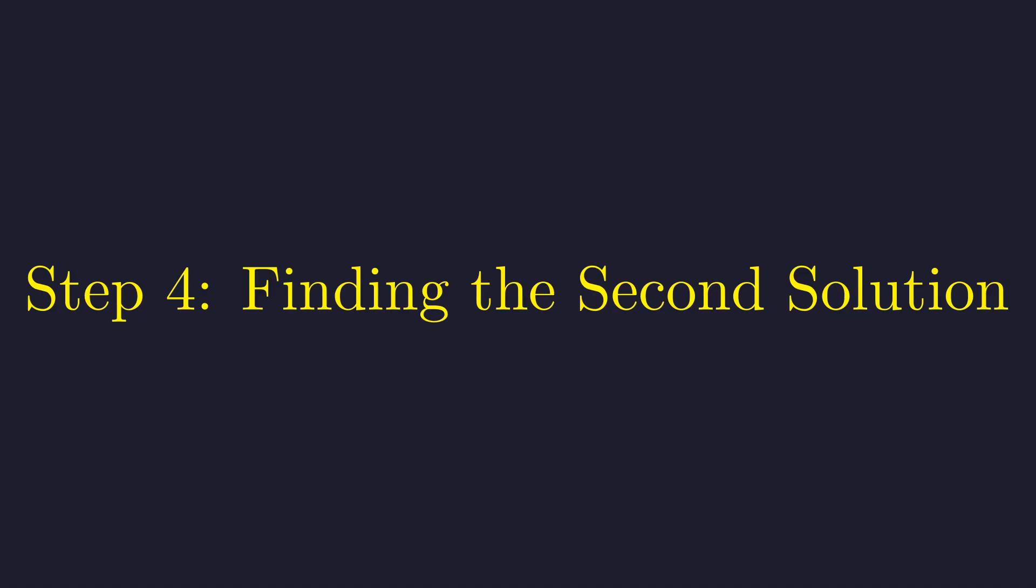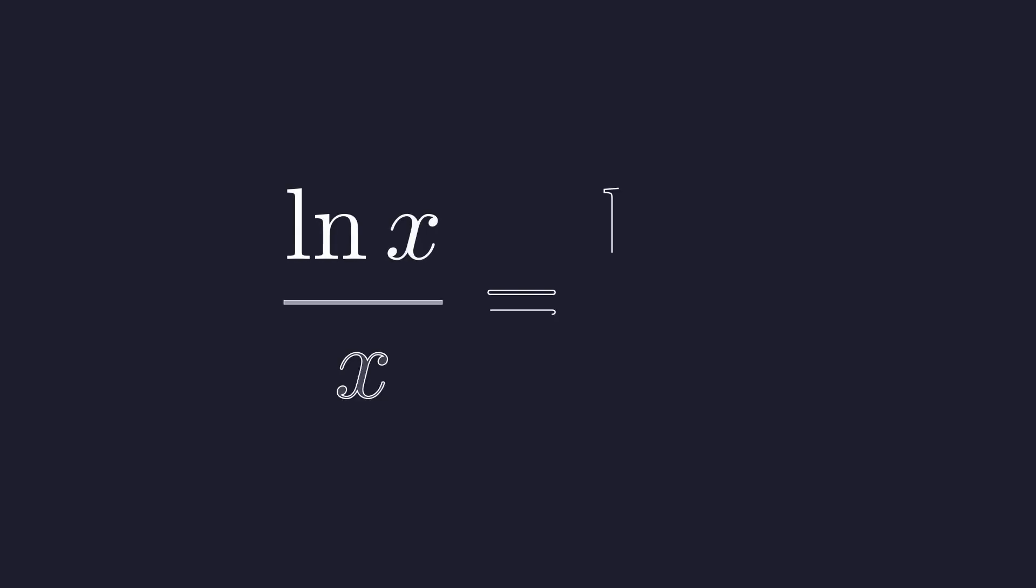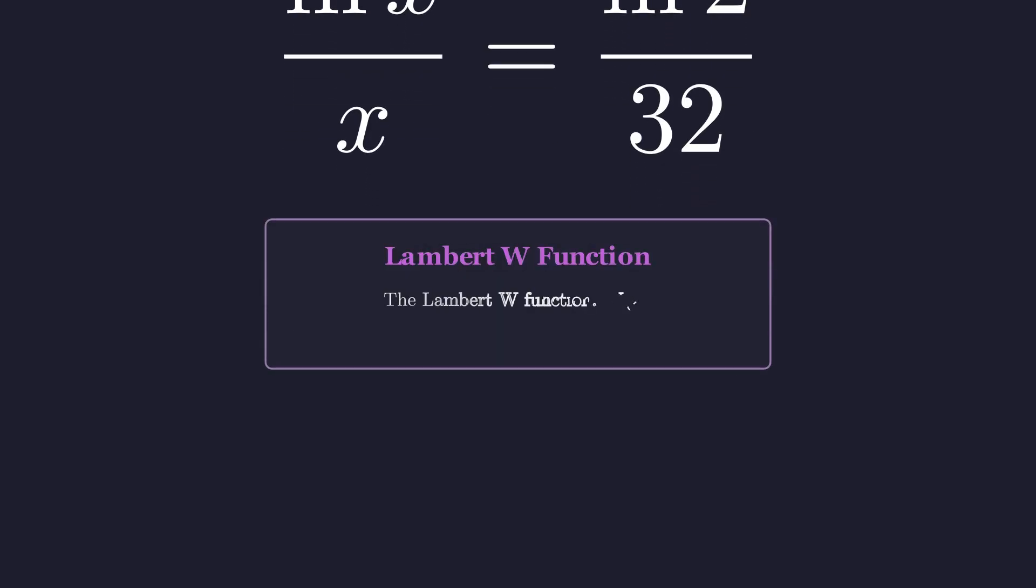For that, we need a more powerful mathematical tool. Taking the natural logarithm of both sides of our simplified equation gives us the logarithm of x over x equals the logarithm of 2 over 32. This type of equation cannot be solved with elementary algebra. We need to introduce a special function called the Lambert W function.